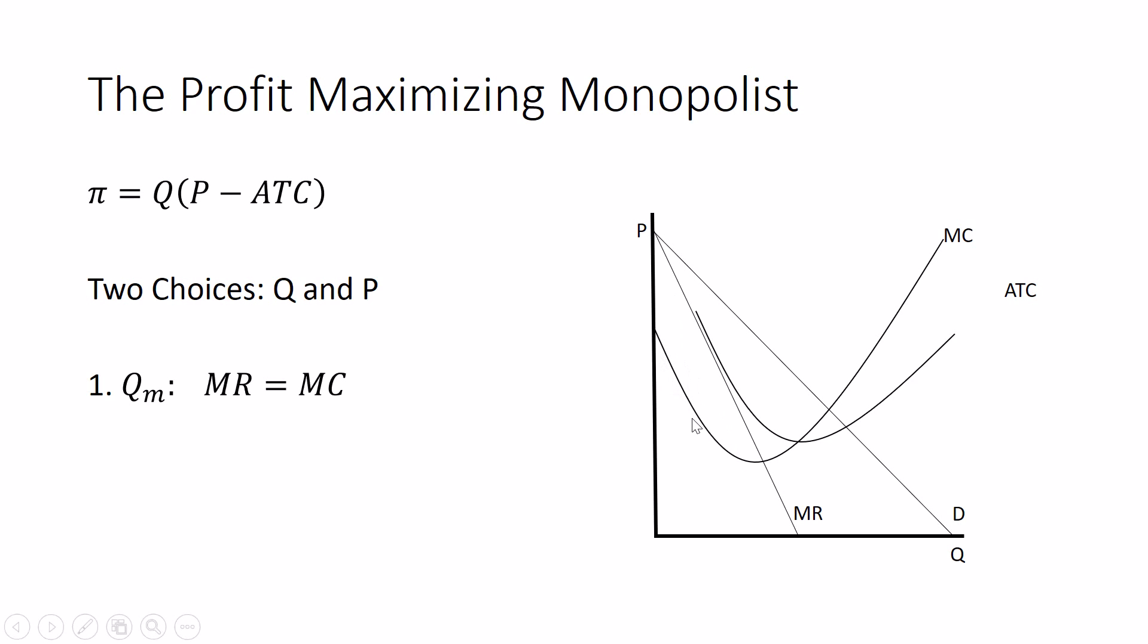As long as the money coming in is greater than the money going out, those are good sales. And so we will increase production all the way up until this quantity.